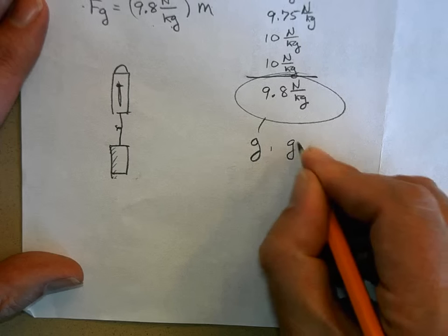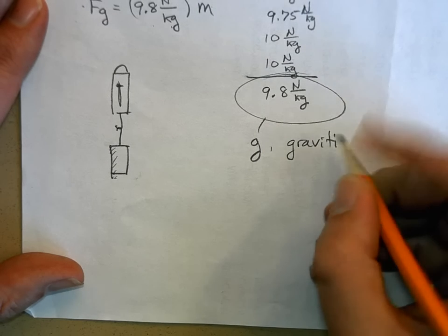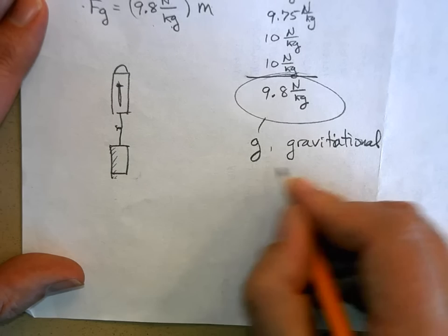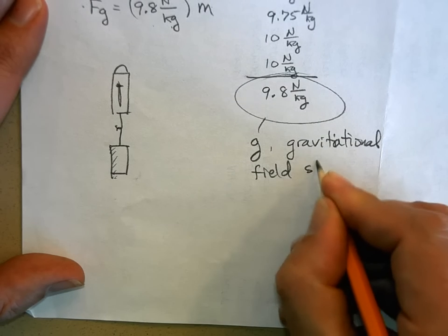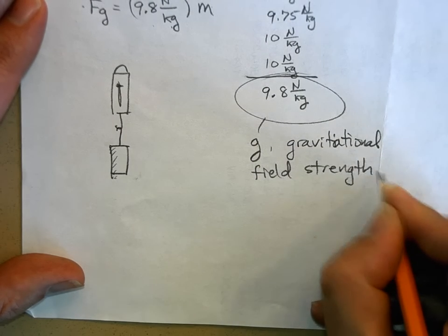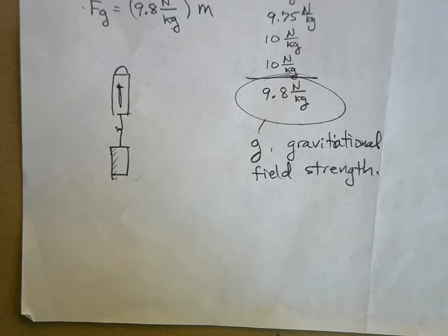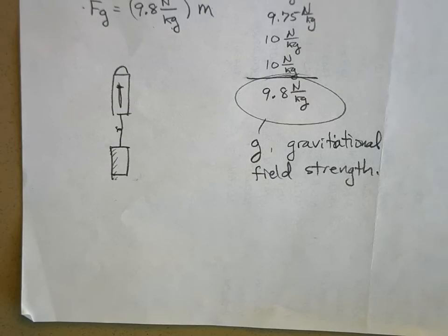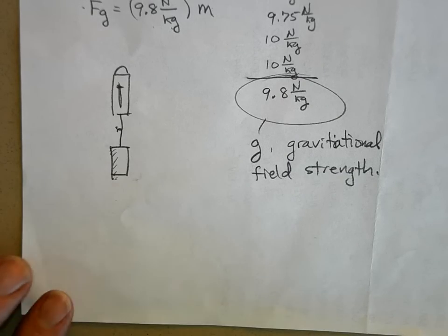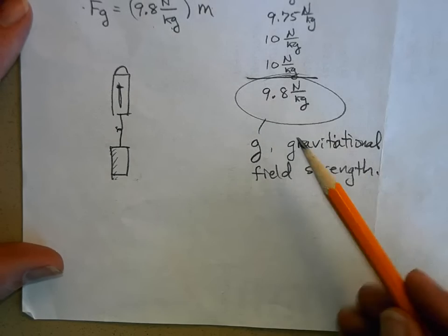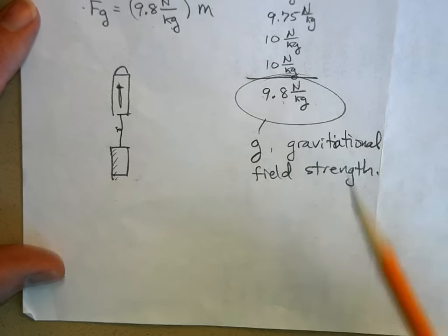G is called the gravitational field strength. You've heard of force fields in science fiction — well, in reality there are force fields, and you live in one all day long. That is Earth's gravitational field. If you're close to Earth's surface, gravity pulls on everything with 9.8 newtons of force for every kilogram of mass.